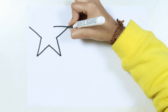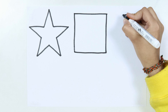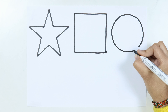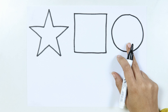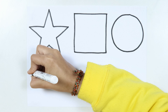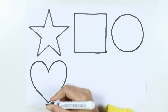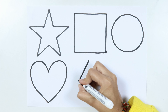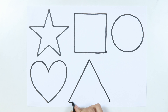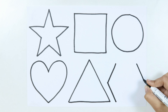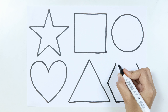A star. Square. Circle. Twinkle, twinkle, little star. Heart. Triangle.